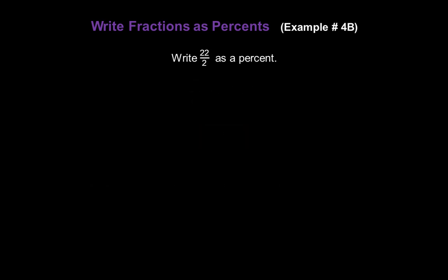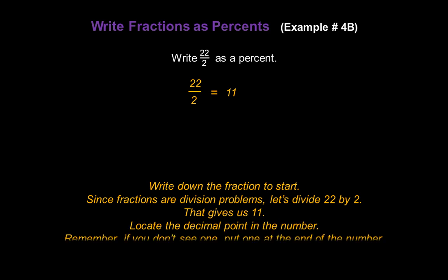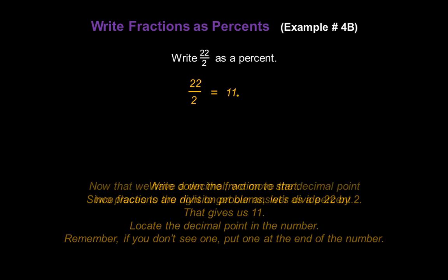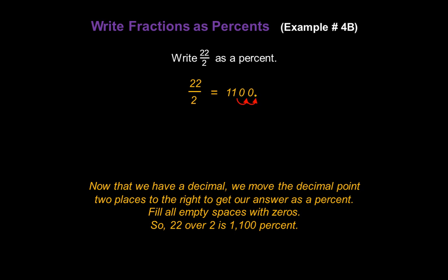Now let's write twenty-two over two as a percent. Start by writing down the fraction: twenty-two over two. Since fractions are division problems, divide twenty-two by two — that gives us eleven. Locate the decimal point; if you don't see one, put one at the end of the number. Now move the decimal point two places to the right and fill the empty spaces with zeros. So twenty-two over two is one thousand one hundred percent.